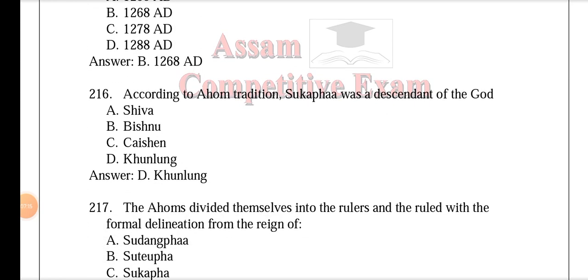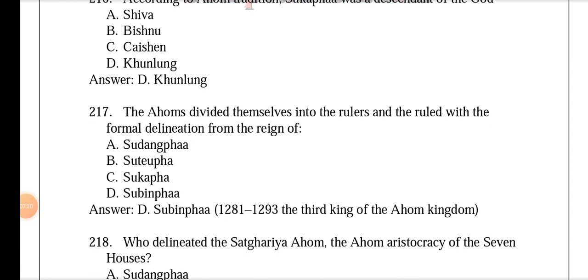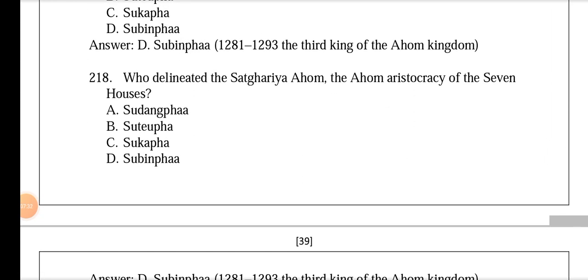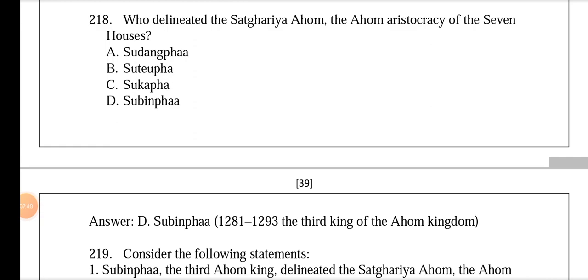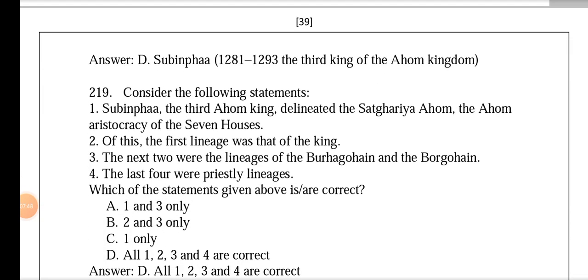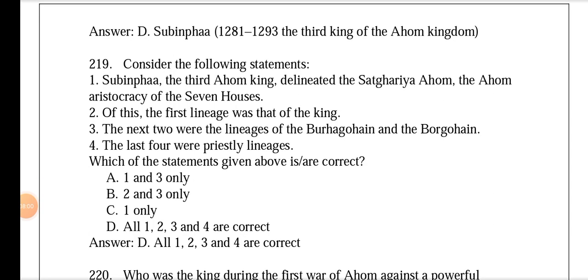According to Ahom tradition, Sukafa was a descendant of the god Khunlung. The Ahoms divided themselves into rulers and ruled, with formal delineation from the reign of Subinfa (1281–1293), the third king of the Ahom kingdom. Subinfa delineated the Satghariya Ahom — the Ahom aristocracy of the seven houses. The first lineage was that of the king, the next two were the lineage of Burago High and Borgo High, and the last four were priestly lineage. All four statements about this are correct.